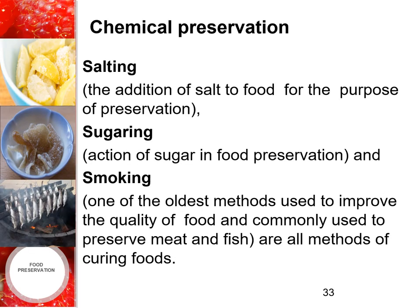The various processes involved in chemical preservation: the first is salting — the addition of salt to food for the purpose of preservation; the second is sugaring — the action of sugar in food preservation; and the third is smoking — one of the oldest methods used to improve the quality of food, commonly used to preserve meat and fish. These are all methods of curing foods.